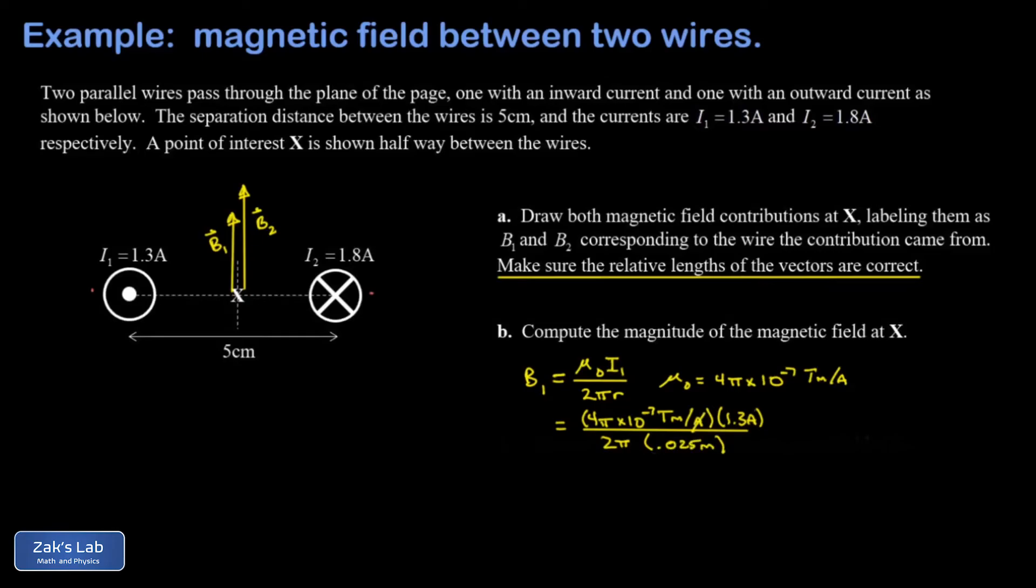I can see my units work out. The units of amps cancel there, meters there, teslas is all that remains. This gives me 1.04 times 10 to the negative 5th tesla.